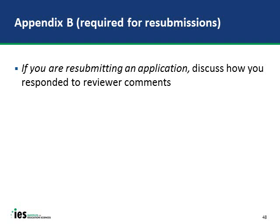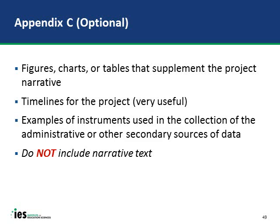Appendix B is required for resubmissions only—its only use is to address reviews of the previous application. It's important to respond to all previous comments. If your application has changed so much that it's essentially a new application rather than a resubmission, you can make that argument here. Appendix C is optional and can include materials related to the evaluation and partnership—for example, diagrams of the partnership management structure, a project timeline, or examples of instruments being used for collecting administrative or secondary data such as a teacher survey. Please do not include narrative text in Appendix C.